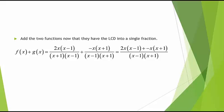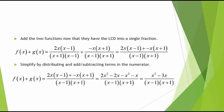Notice that x plus 1 times x minus 1 is the same as x minus 1 times x plus 1, since it doesn't matter which order we multiply. Next, we have to simplify the fraction by distributing the 2x and the negative x to each binomial, then adding and subtracting the terms in the numerator to simplify.